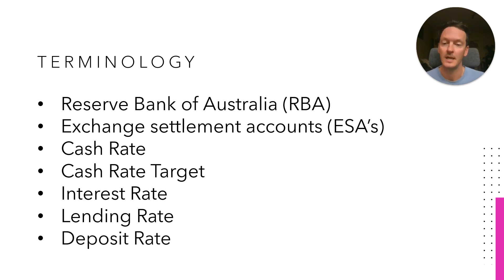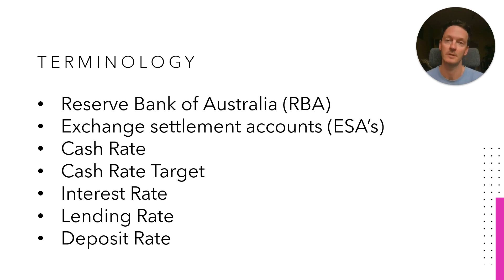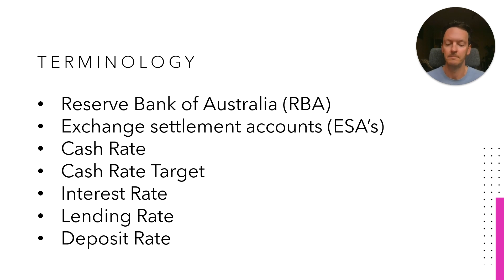Then we have two rates that are important in understanding the interest rate corridor. The first is the lending rate — that's the rate that institutions who wish to borrow money will be paying. Then you've got the deposit rate, which is the other side of the coin — financial institutions with surplus funds in their exchange settlement accounts will be depositing that with the Reserve Bank of Australia at that particular rate. If any of these are a little unclear, go over the description again or refer to your textbook before you move forward with the video.